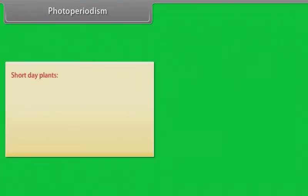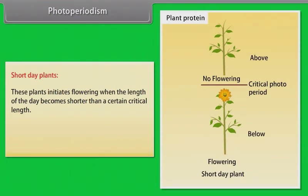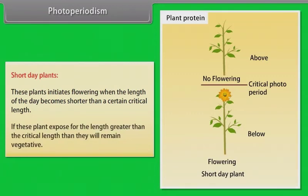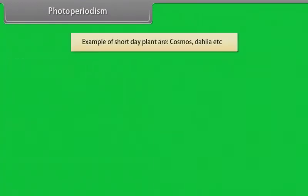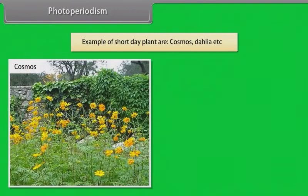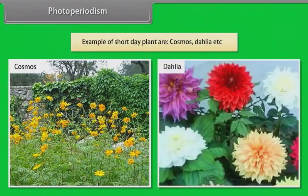Short day plants: these plants initiate flowering when the length of the day becomes shorter than a certain critical length. If these plants are exposed for the length greater than the critical length, then they will remain vegetative. Example of short day plants are cosmos, dahlia, etc.